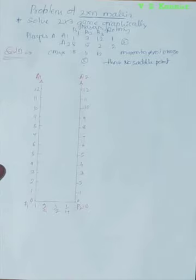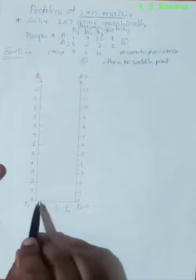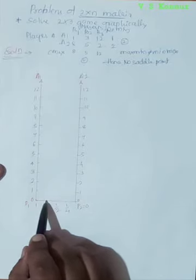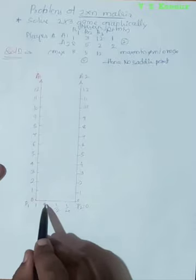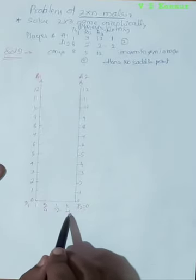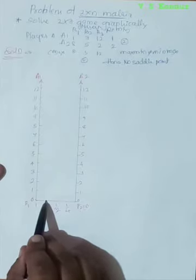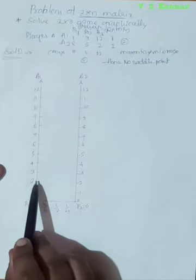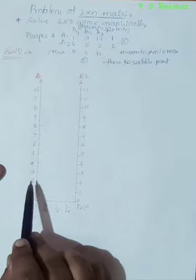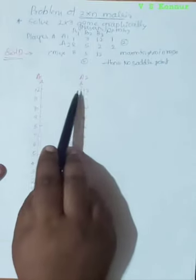Now we draw A1 and A2 vertical lines and plot B1, B2, B3 graphically. The distance between the two vertical lines is one unit. Since the scale doesn't fit well, one unit is taken as one-fourth. The scale markings go: 3/4, 1/2, 1/4, 0 for P2 and P1 equal to 1. The numbers on both vertical lines depend on the maximum values — the maximum here is 12, so both axes go from 0 to 12.